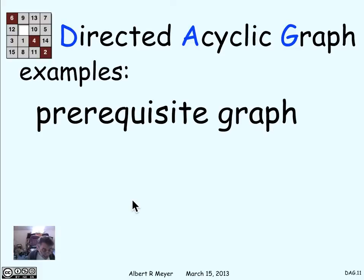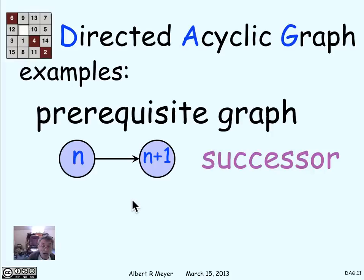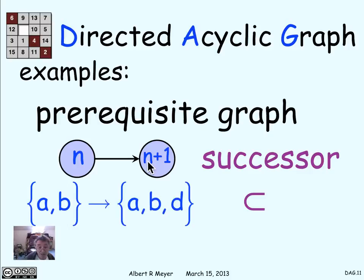Some examples of DAGs: the prerequisite graph is one, and in general, any set of constraints on tasks specifying which ones you have to do before others defines a DAG structure. One you might not have thought of is the successor function, which defines a relation on the integers going from n to n+1 — an arrow directly from n to n+1. The positive length walk relation in this graph gives a positive length walk from n to m precisely when n is less than m. So the successor DAG's paths represent the less-than relation. Less-than doesn't have any cycles, because if a is less than b, you're never going to get from b back to something less than it, like back to a. So there can't be any cycles in the successor DAG.